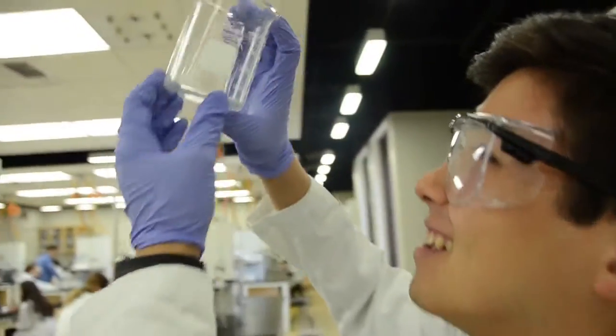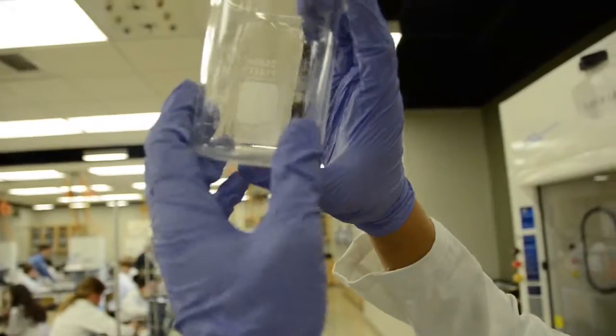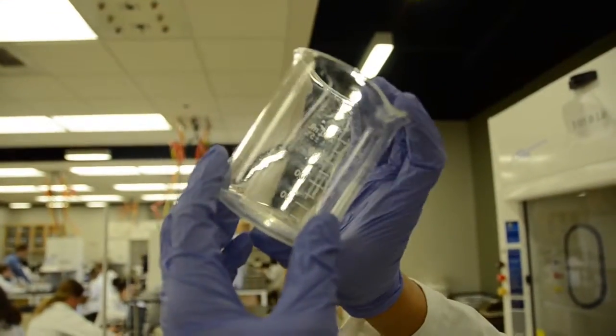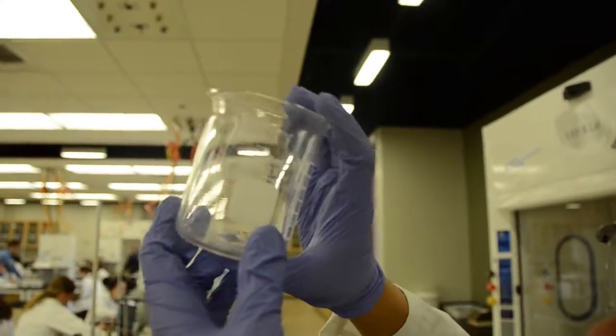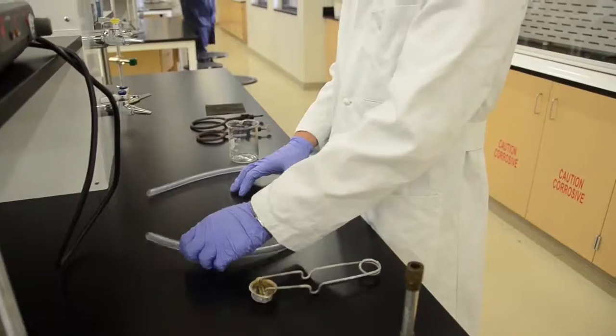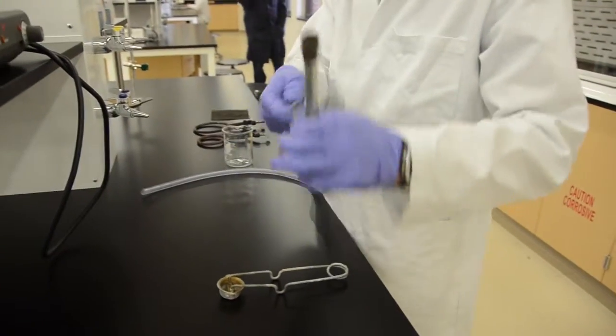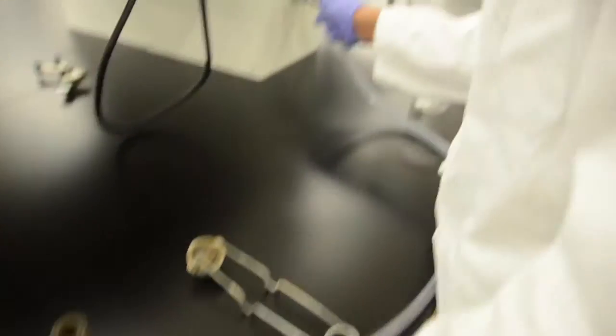Before doing anything else, make sure that you inspect all of your equipment, especially any glassware for cracks or chips. When glass is heated, it expands which will place stress on any cracks possibly breaking the beaker completely. Once you have ensured the safety of all equipment, connect the gas tubing to the Bunsen burner and then to the gas source.